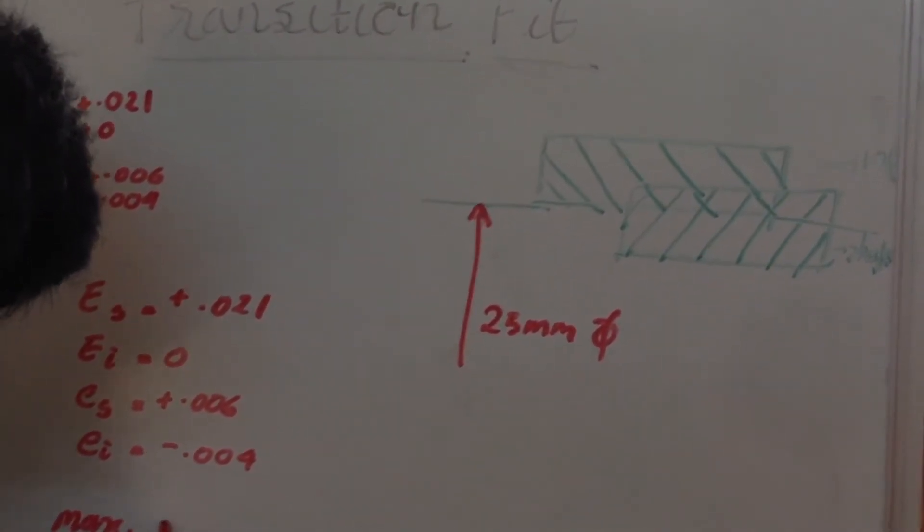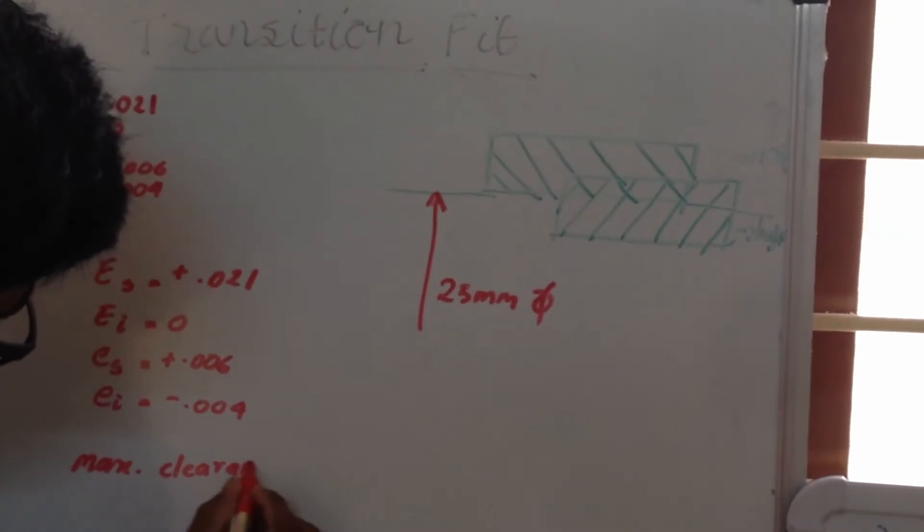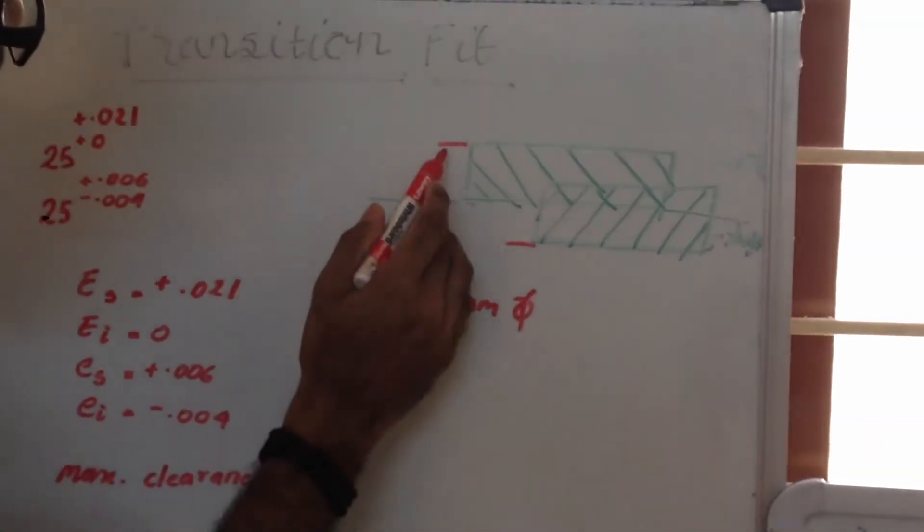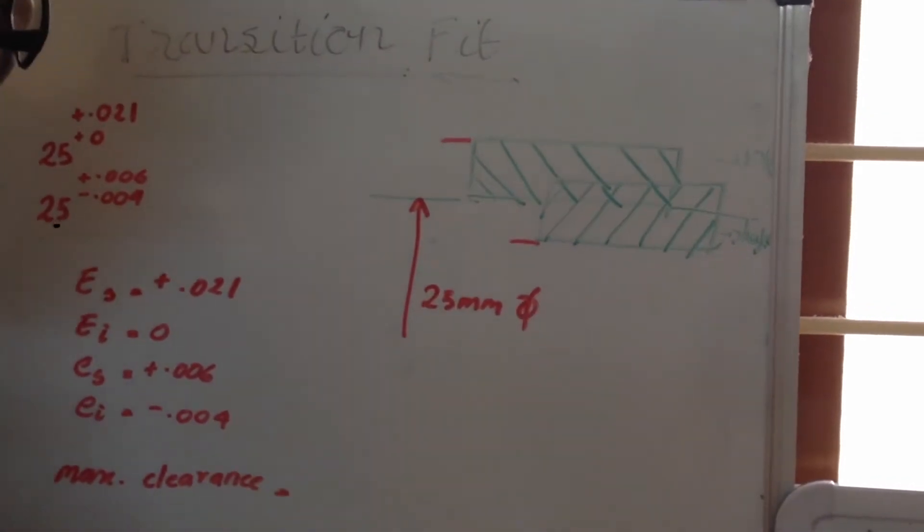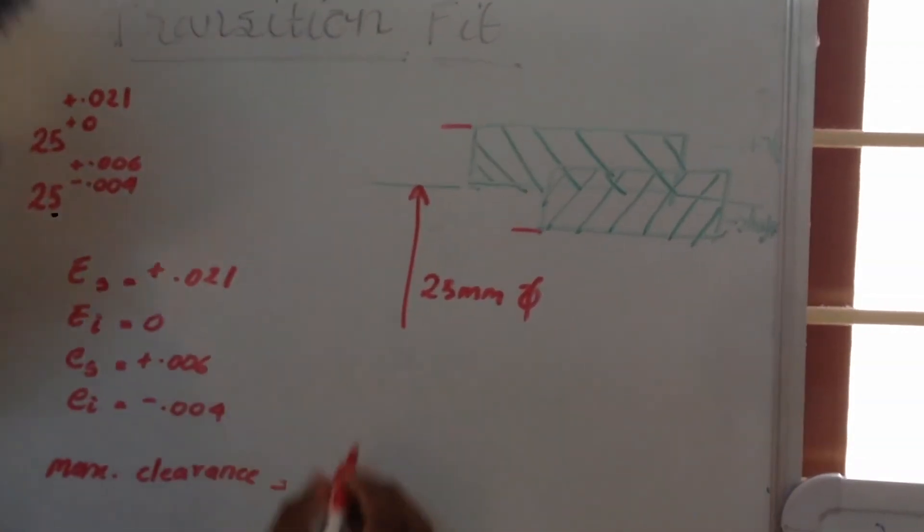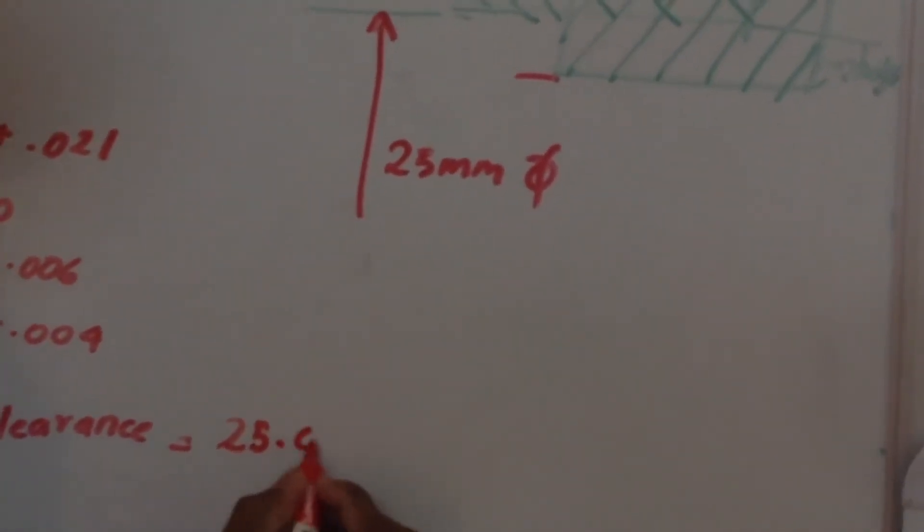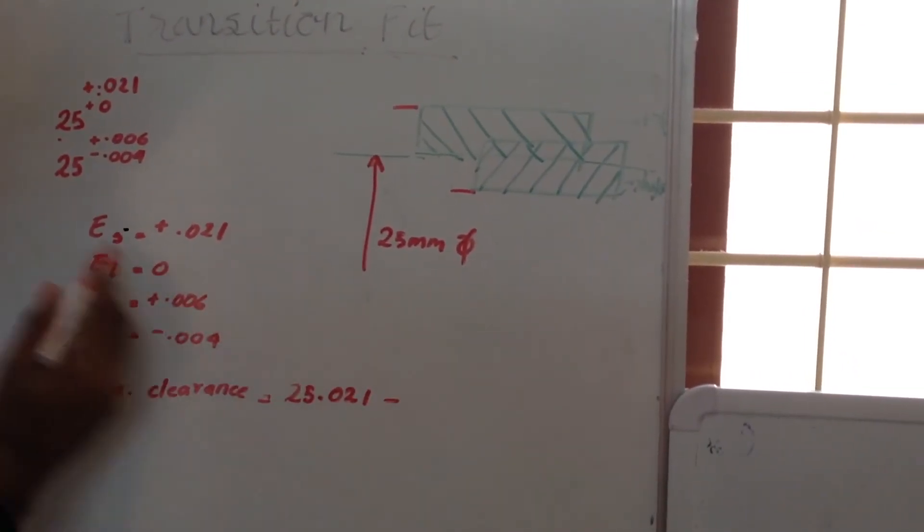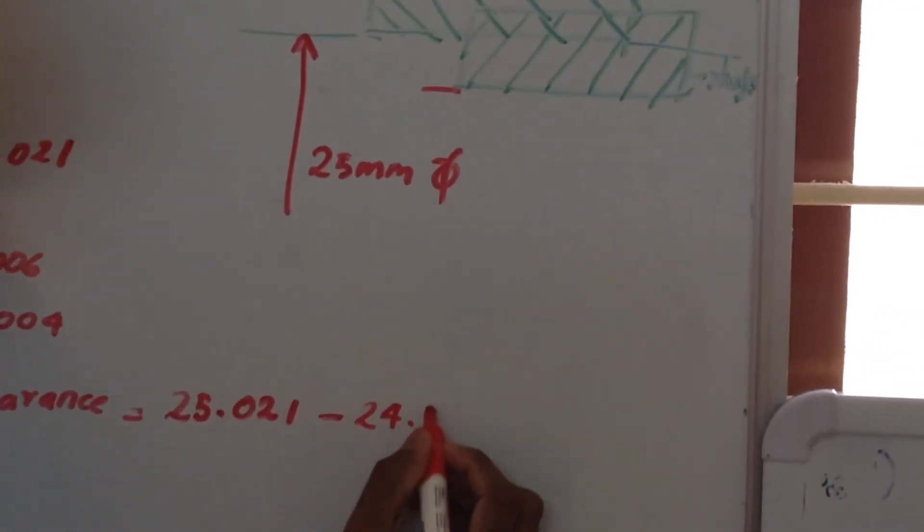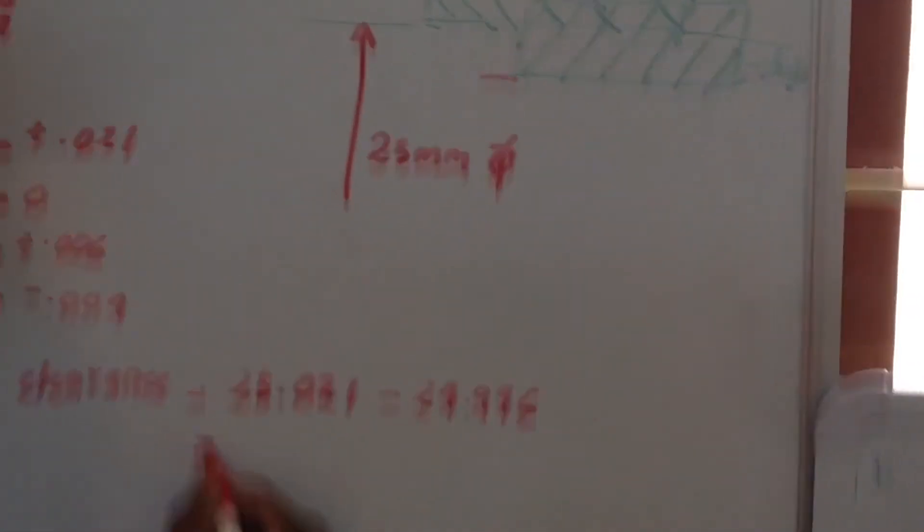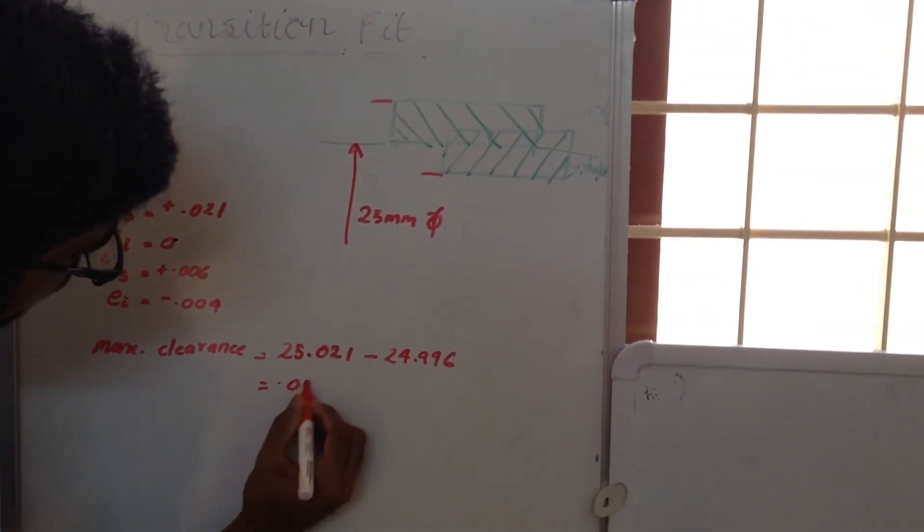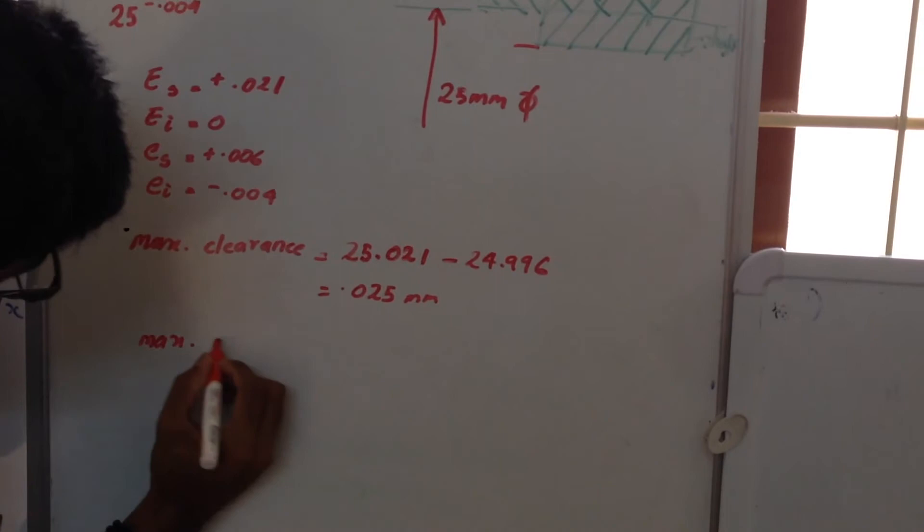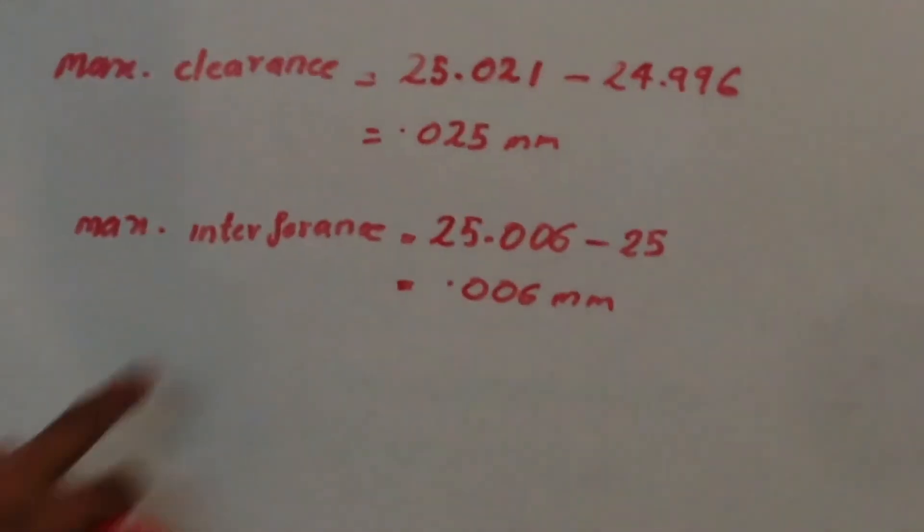The maximum clearance, maximum clearance always this value minus this value. There is a maximum limit of hole minus minimum limit of hole shaft, is 25.021 minus 24.996. The value is 0.025 mm.